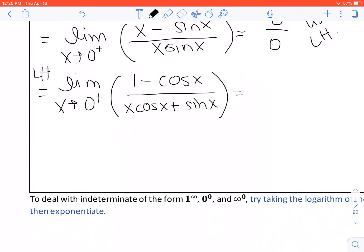And evaluating this at 0 from the right, we have 1 minus cosine of 0 from the right is 1, over 0 times 1 is 0 plus 0. So we get 0 over 0, which is still indeterminate.